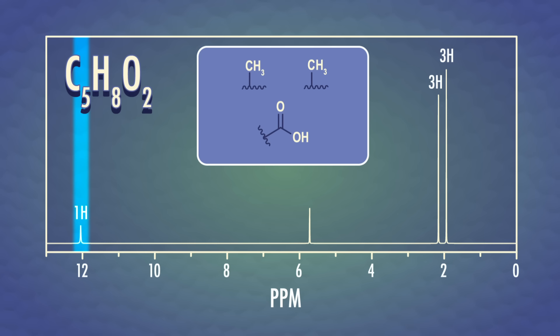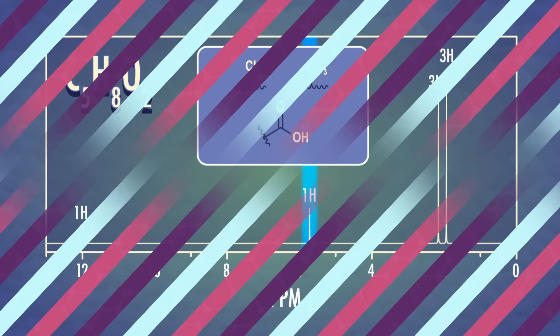One more peak to go, and this single peak, corresponding to one proton, is a bit deshielded too. In fact, looking at our chart again, it's showing up in the range of alkene hydrogen atoms. The trickiest part about putting these four pieces together is figuring out where to place the two methyl groups and the carboxylic acid on our alkene.